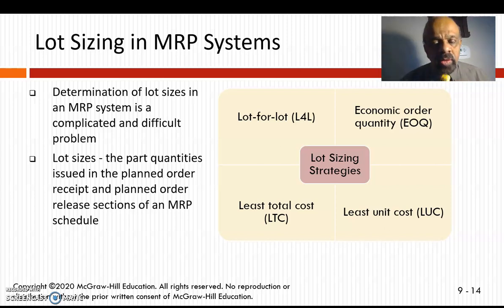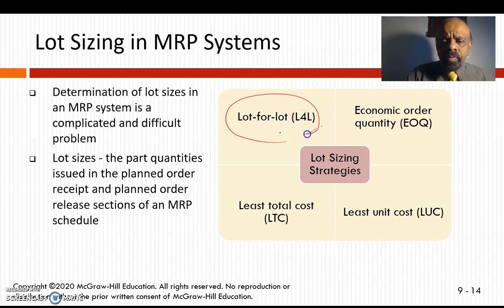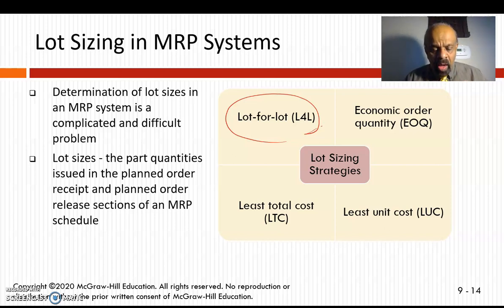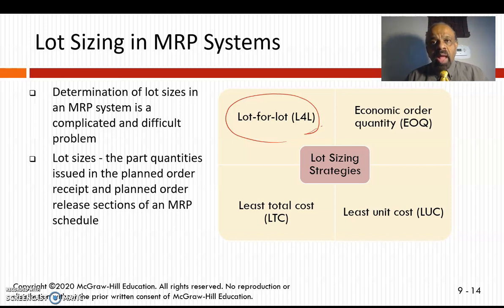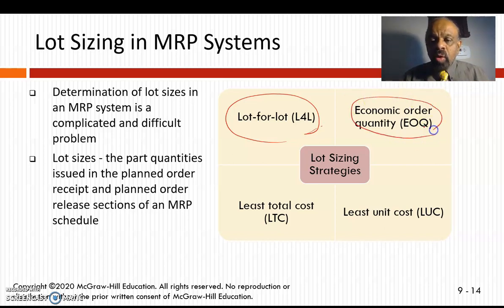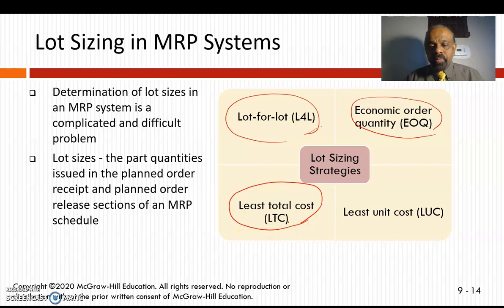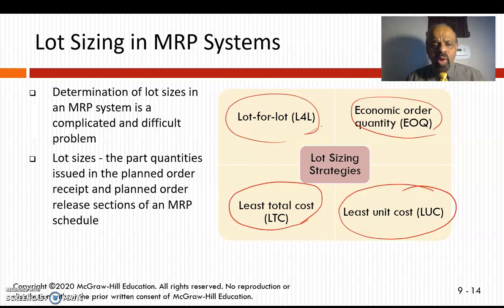Now let's move forward — we're going to be talking about lot sizing in MRP systems. The first strategy is called lot-for-lot, or L4L. That means you buy exactly what you need; if I need 200 widgets, I buy all 200. You can also use EOQ (economic order quantity), least total cost, or least unit cost — these are different lot sizing strategies.